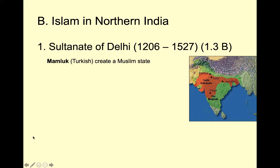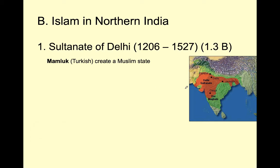Last time we talked about how in 711 the first Muslim conquerors came into India through the Hindu Kush pass and pillaged and plundered, set up a kingdom, gained wealth, attacked Buddhist places of worship and monasteries, and established themselves as a political power in South Asia. Now let's go to 1200. In 1206, we have a new Muslim state being created called the Sultanate of Delhi.